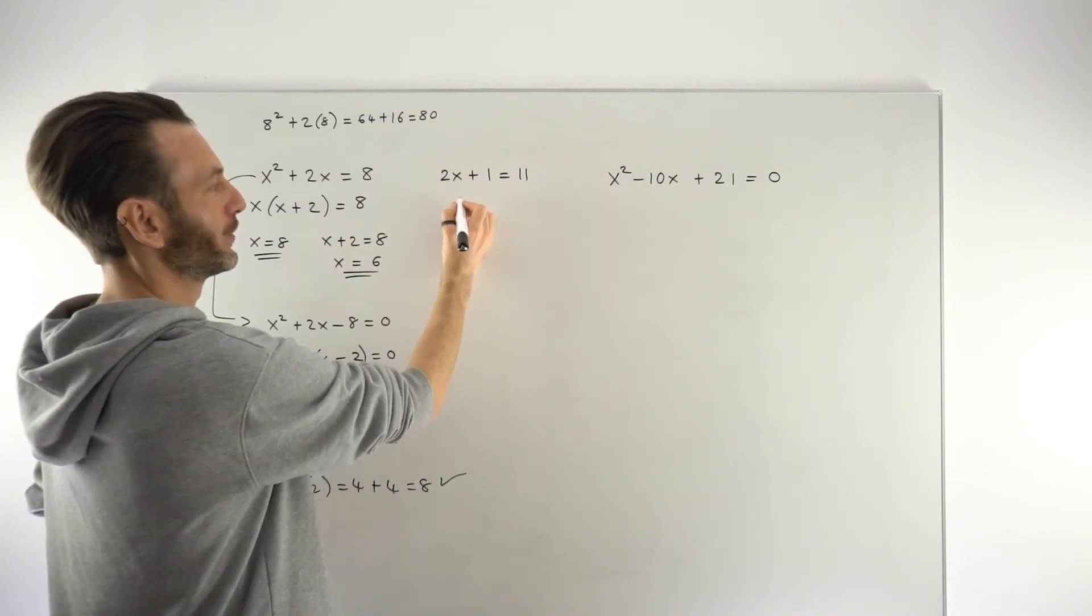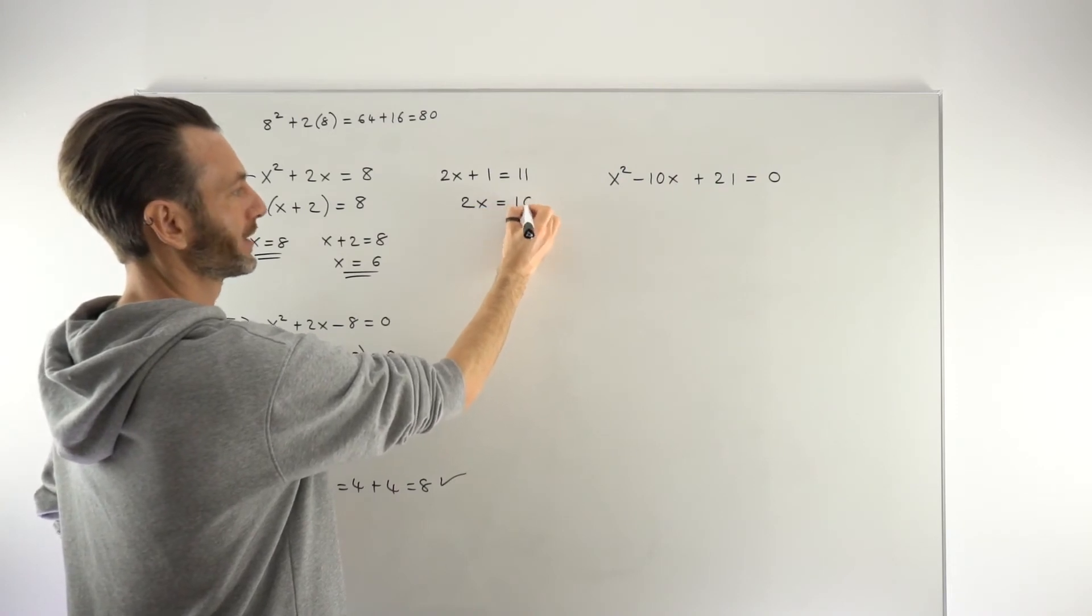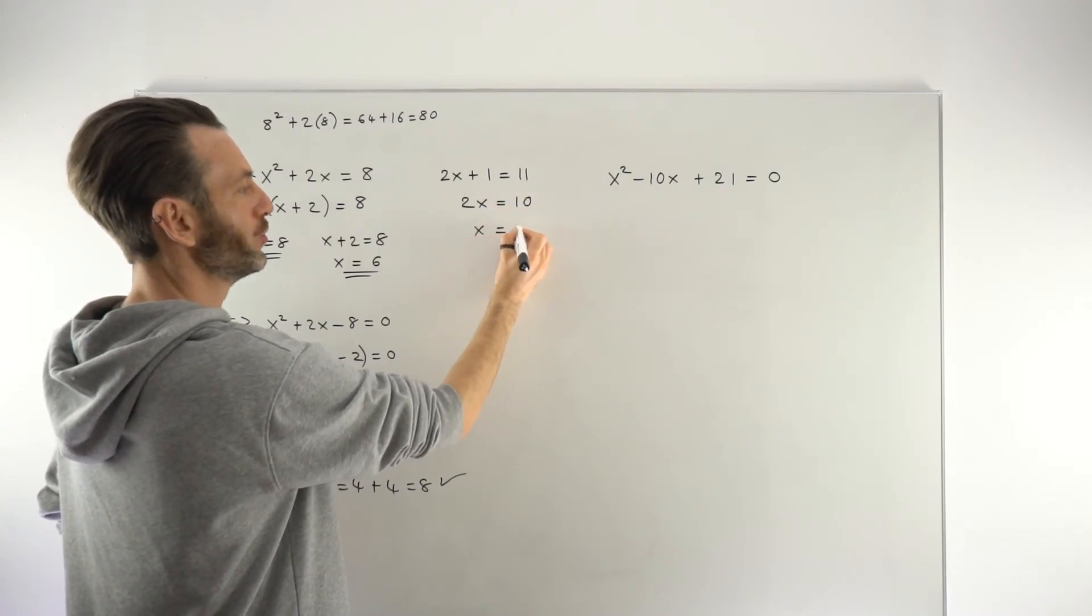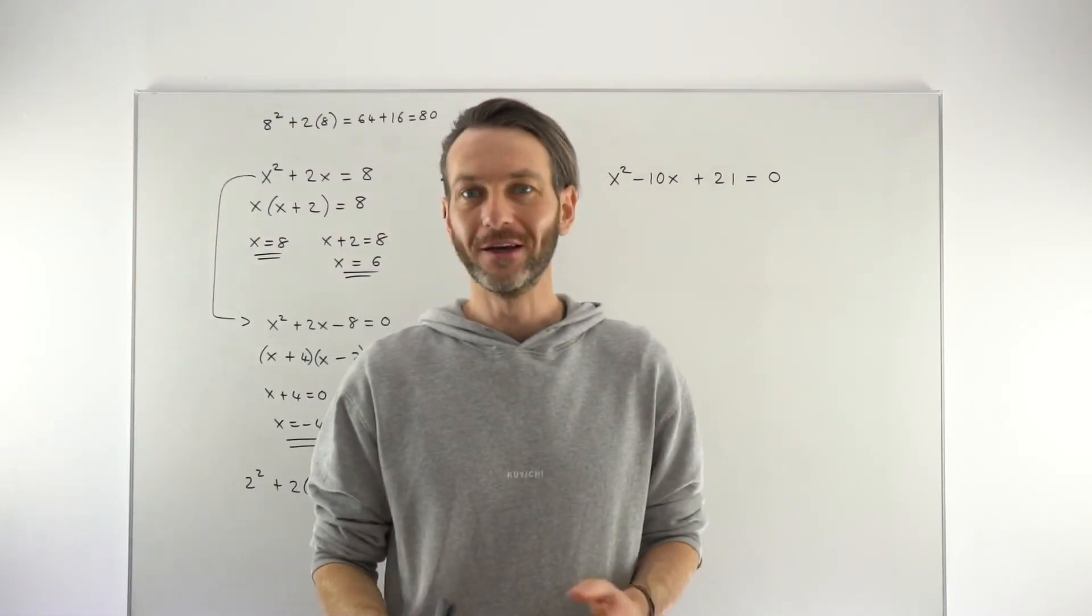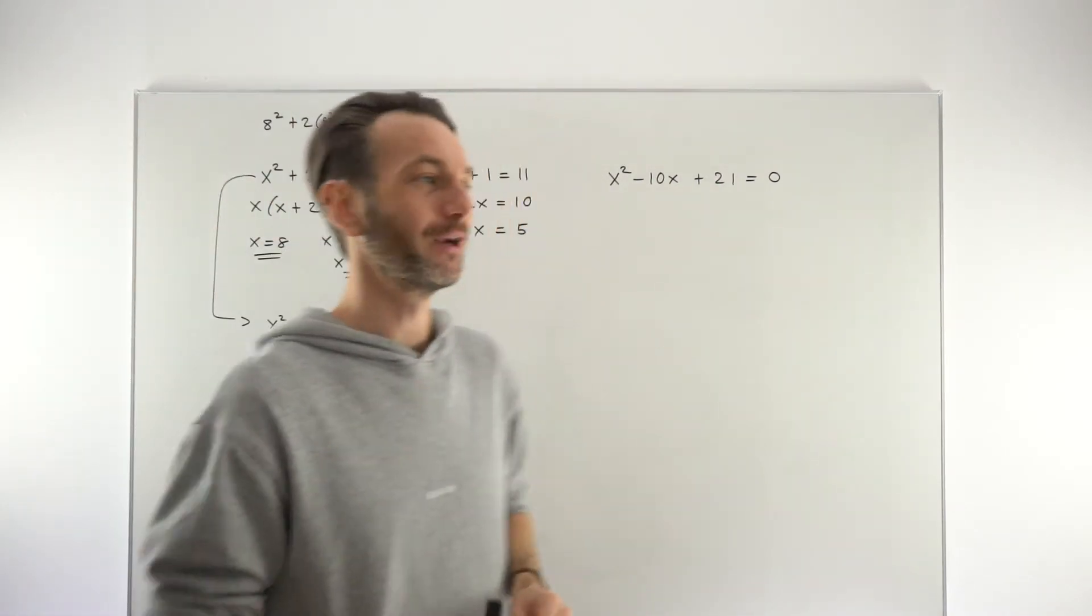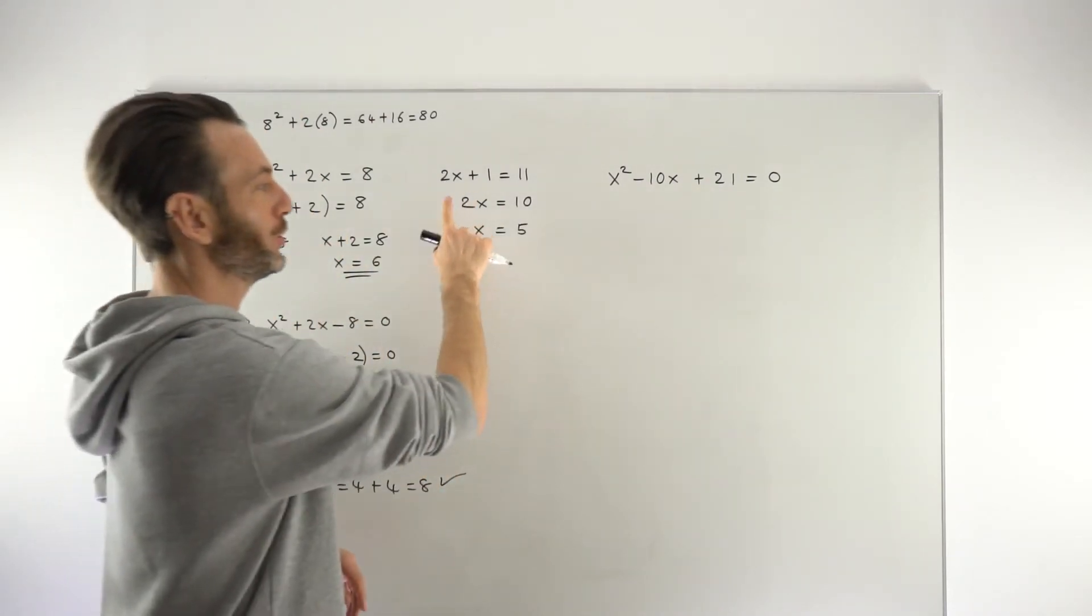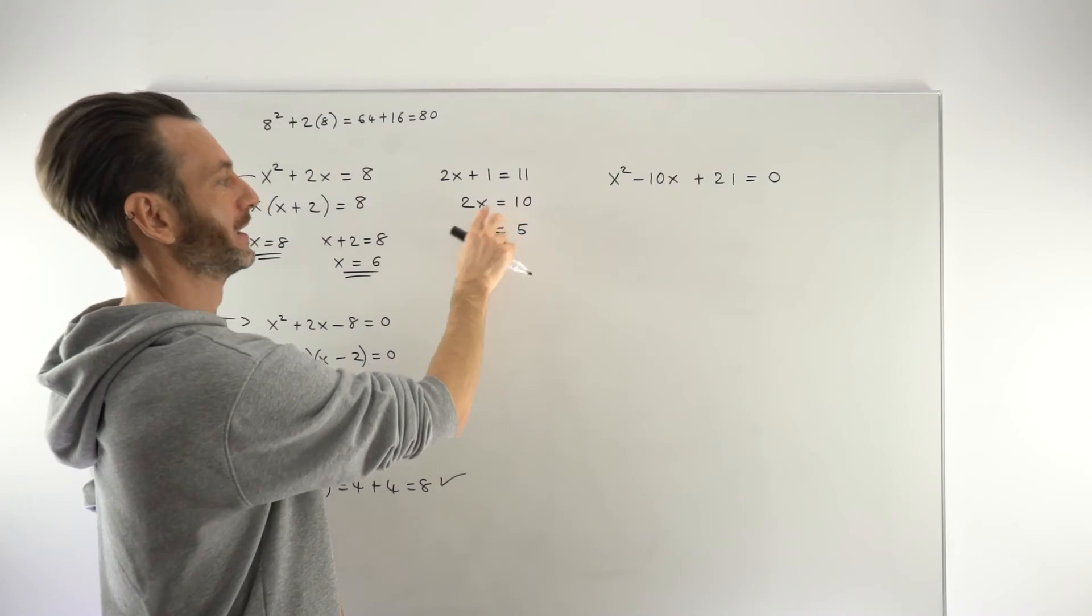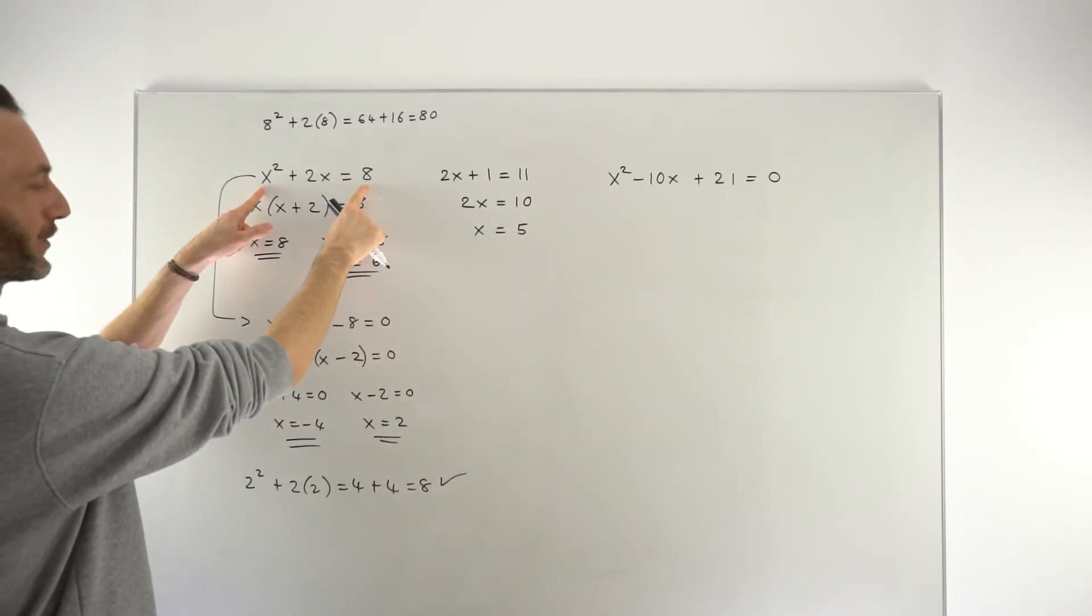In fact the goal here is to separate the variables, the x's, from the numbers. So in this case we would subtract 1 from both sides to get 2x equals 10 and then divide both sides by 2 to get a final solution of 5. But because students have generally done hundreds if not thousands of linear equations before they get to quadratic equations, they're used to getting the number on one side and the variables, the x's, on the other.